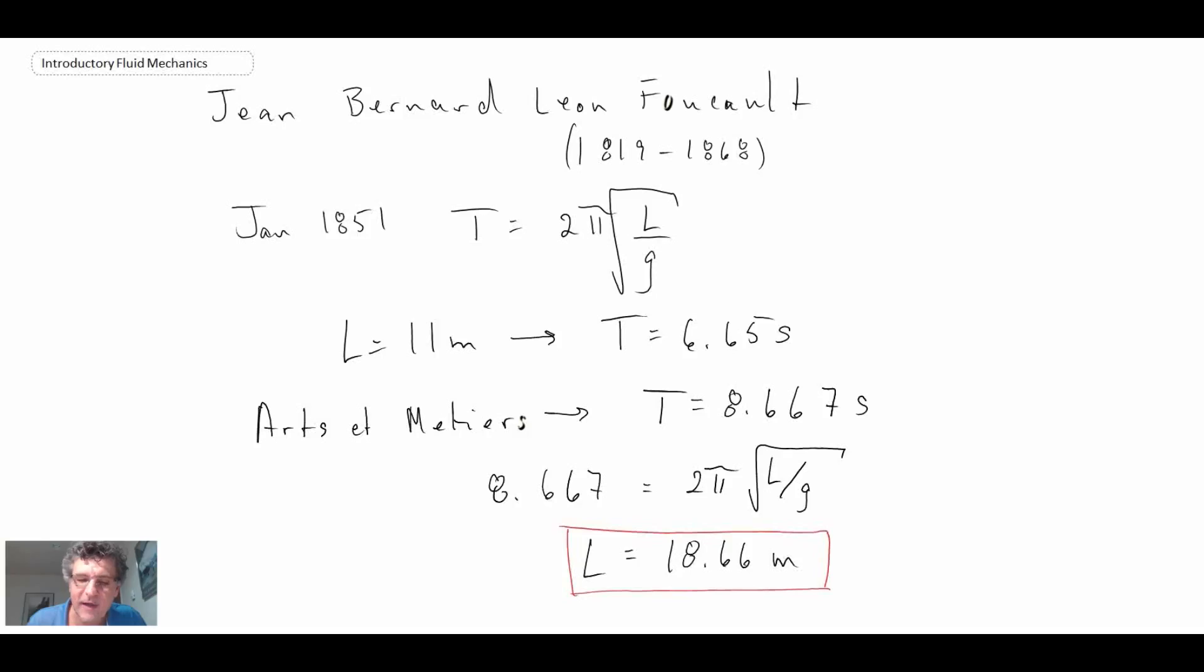But anyways, that gives you an example of the pendulum, some famous world history in terms of an experiment proving that the earth does indeed rotate. And the power of dimensional analysis for understanding mathematical physics systems. So that concludes dimensional analysis. We're now going to move into other aspects of dimensional analysis and fluid mechanics. That concludes Buckingham Pi, I should say. And we're now going to look at similitude, similarity theories, and very important non-dimensional numbers that we have and use within fluid mechanics.